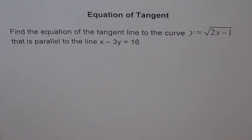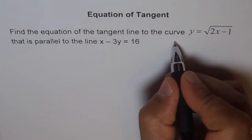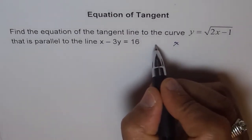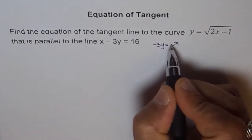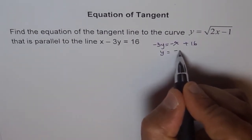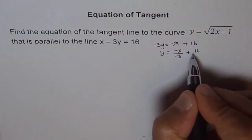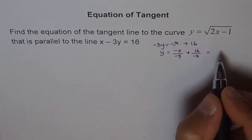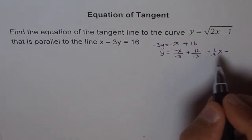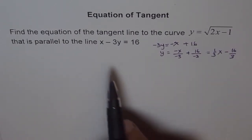Let's first reorganize the line equation to find the slope. We have minus 3y equals minus x plus 16, so y equals x over 3 minus 16 over 3. This gives slope 1 over 3x, and the constant is minus 16 over 3. So the slope is 1 over 3.